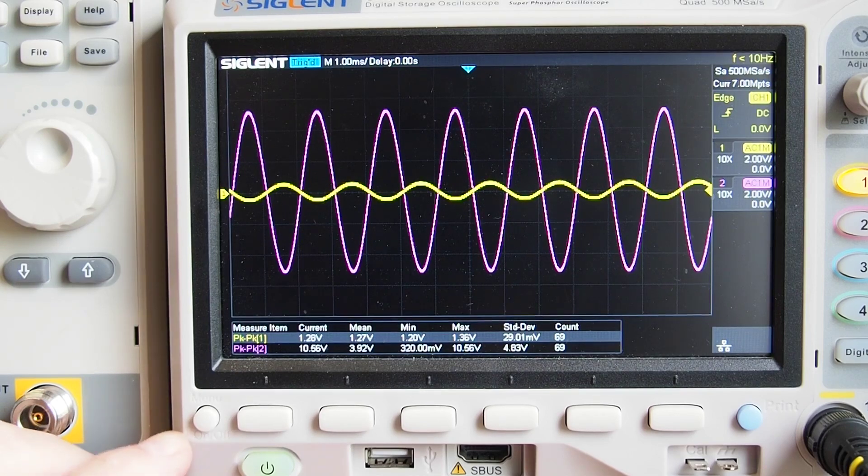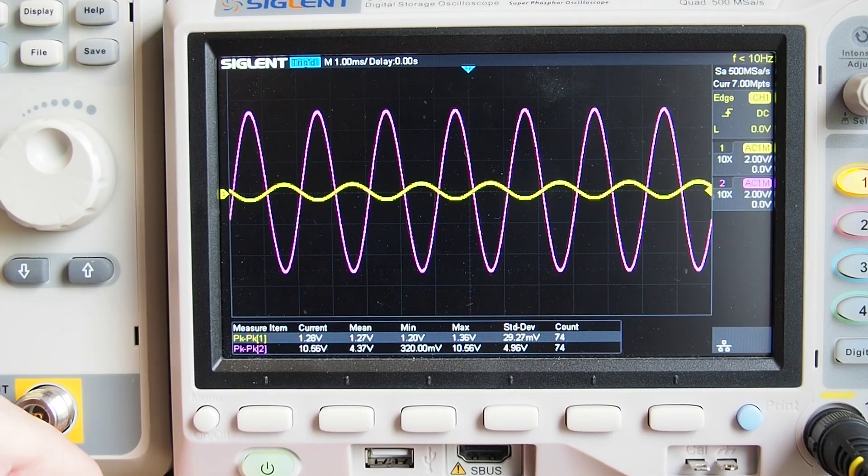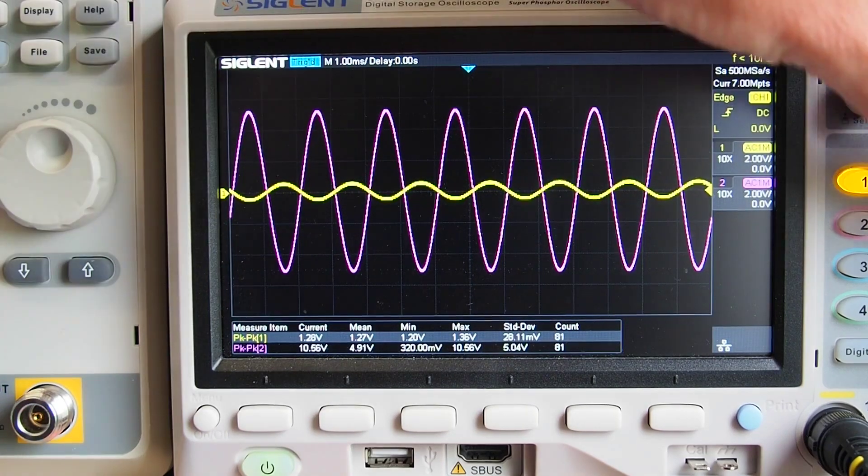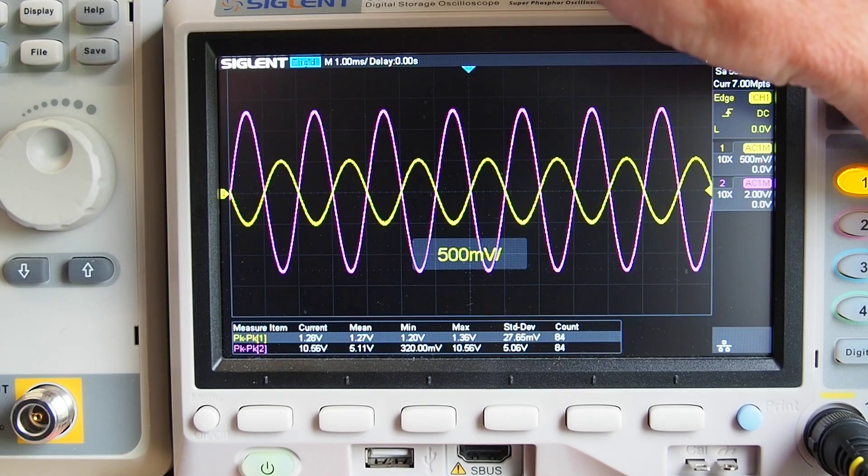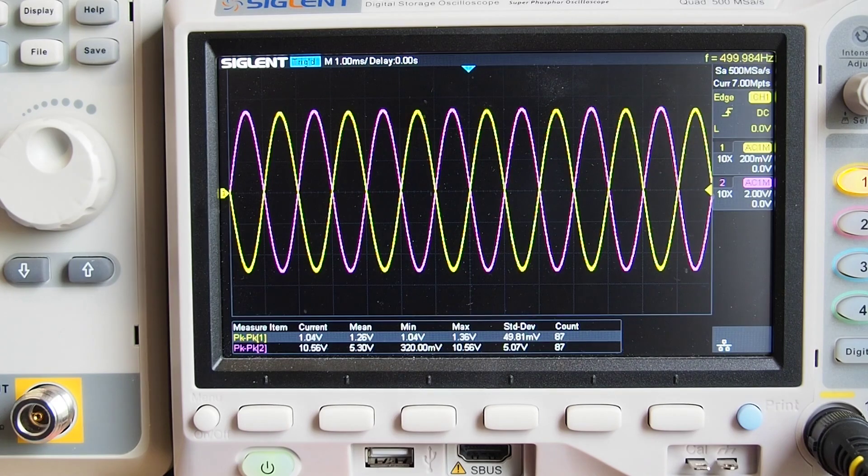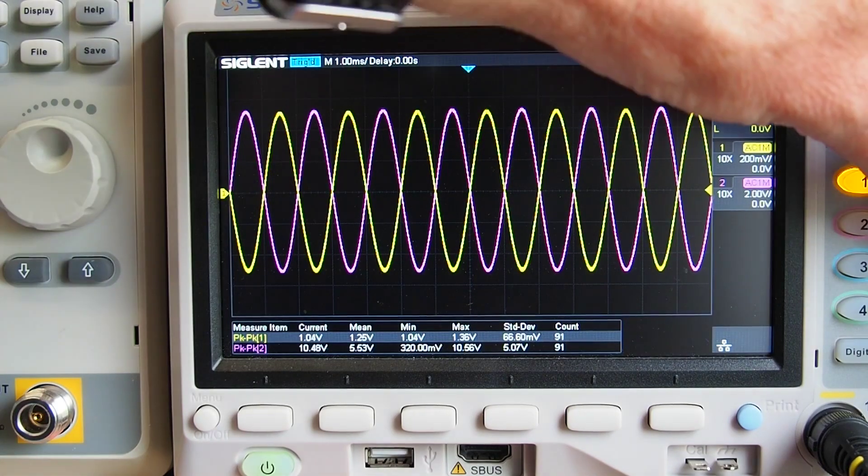So the input is 180 degrees out of phase of the output. If I now turn up that trace on channel one, you can see there we are indeed 180 degrees out of phase.